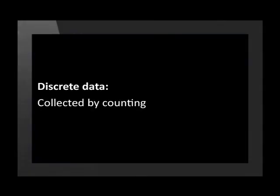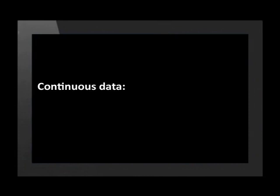This is what's called discrete data. Discrete data is information that's collected by counting. On the other hand, continuous data is information which is collected by measurement. Have a look at this speedometer. The needle goes up smoothly without stopping as it measures speed. There are no gaps in between.